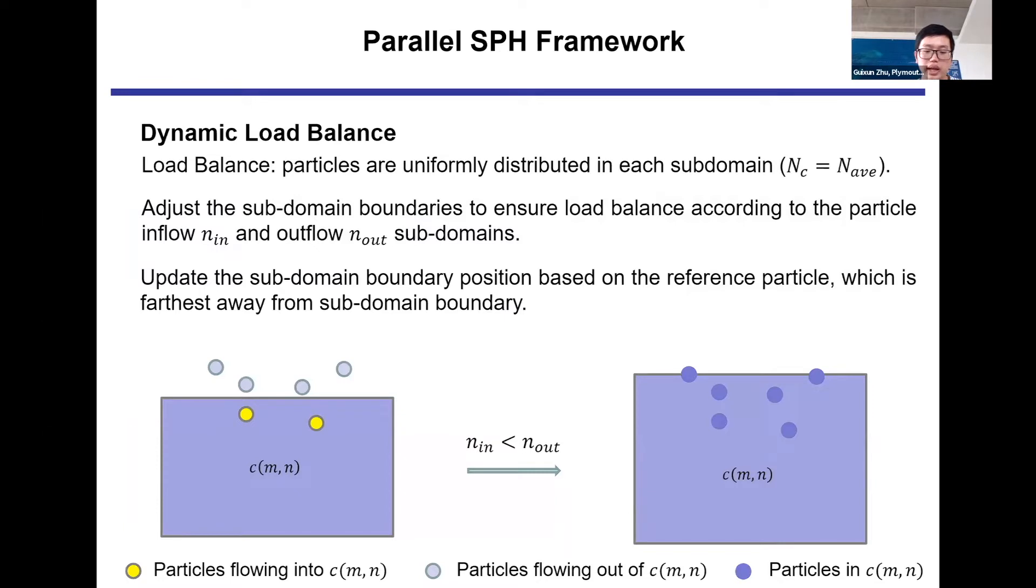With respect to the dynamic load balance, the key is to maintain the average particle numbers in each sub-domain. Therefore, the strategy for dynamic load balance is to update the sub-boundary to maintain a constant average particle number. A new sub-boundary at each time step needs to consider the inflow and outflow particles. When considering the load balance around one direction, all information of the inflow and outflow particles needs to be considered. Meanwhile, we also record the position of particles farthest away from the sub-boundary as a reference position for the new sub-boundary.